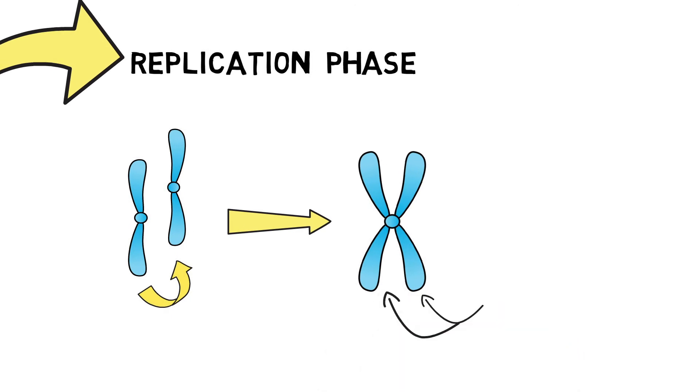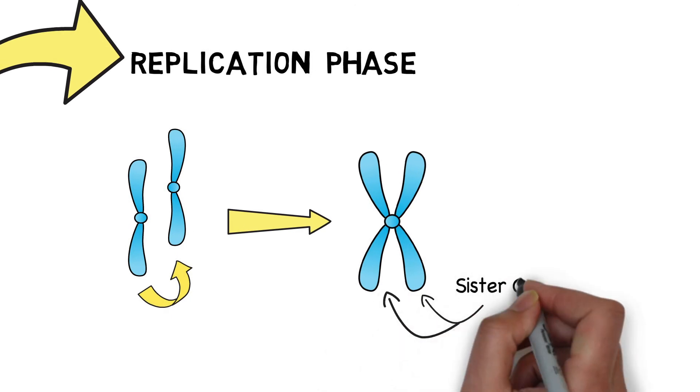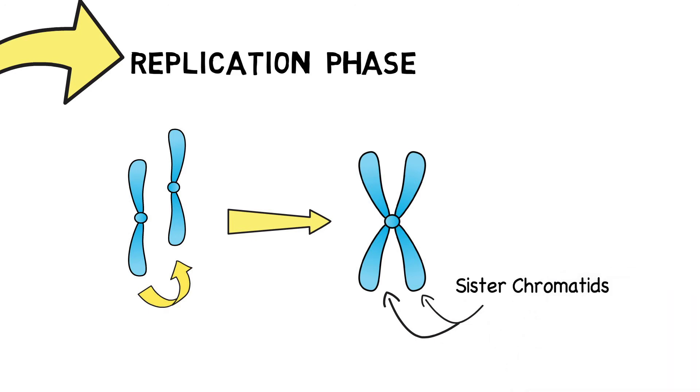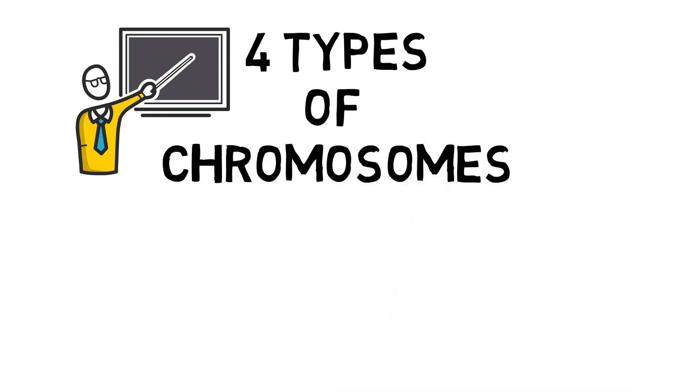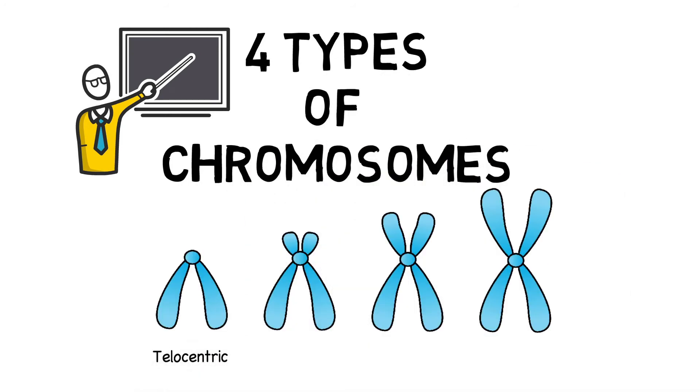The original chromosome and the copy are now called as the sister chromatids, whereas the center of their attachment is called a centromere. Based on position of centromere, there are four types of chromosomes: telocentric, acrocentric, submetacentric, and metacentric.